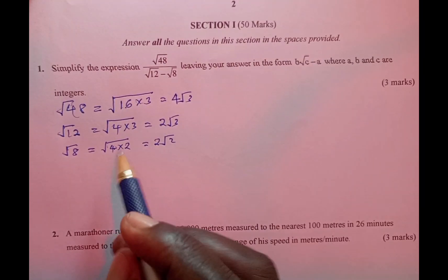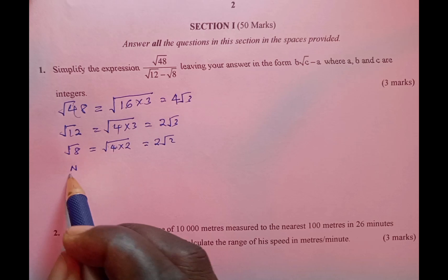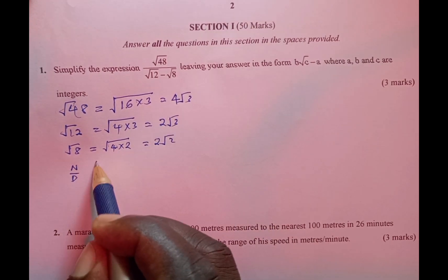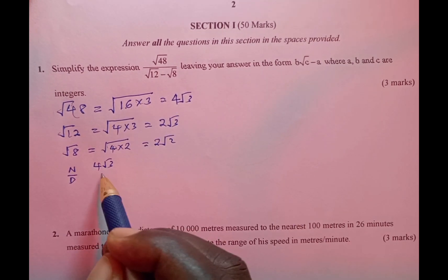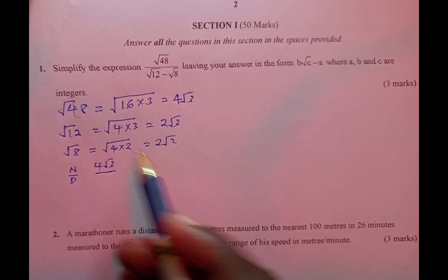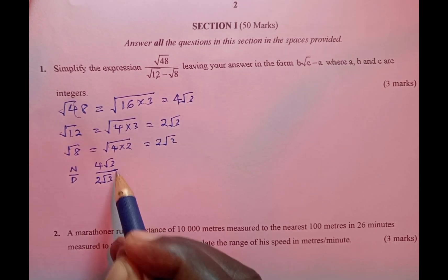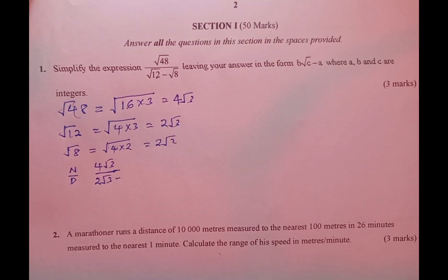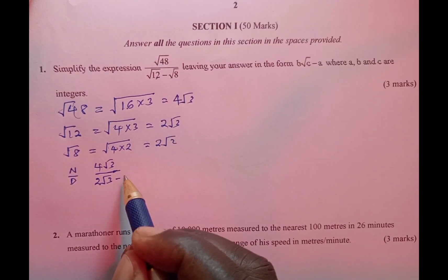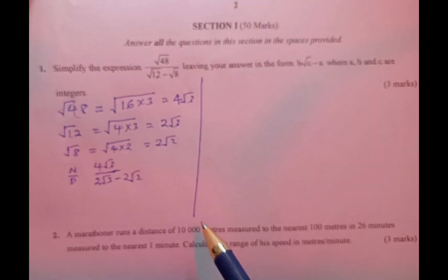Moving down, we are going to rewrite this question as follows: the numerator has been simplified to be 4√3, then divided by √12 which simplifies as 2√3, then minus √8 which is 2√2.